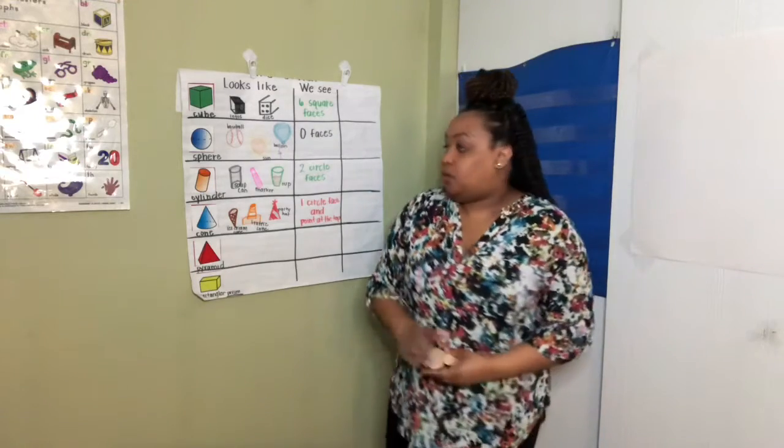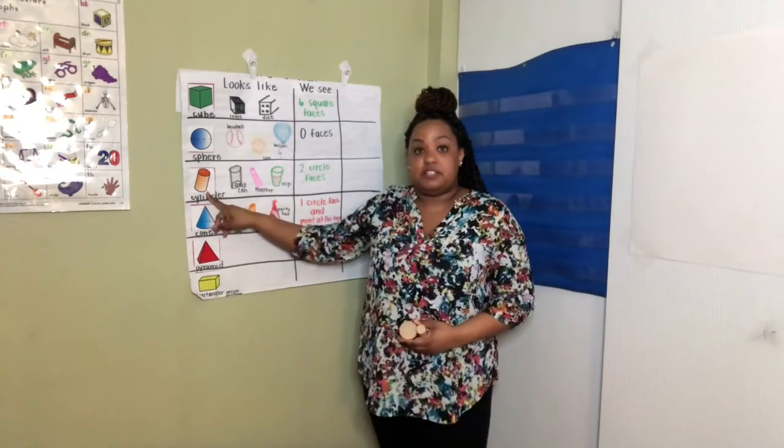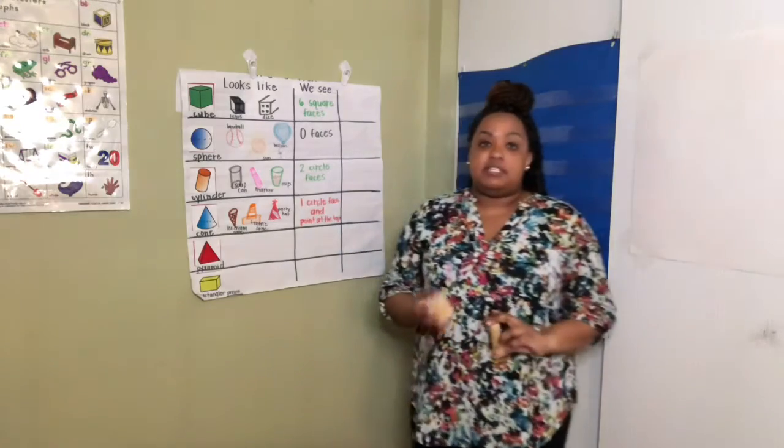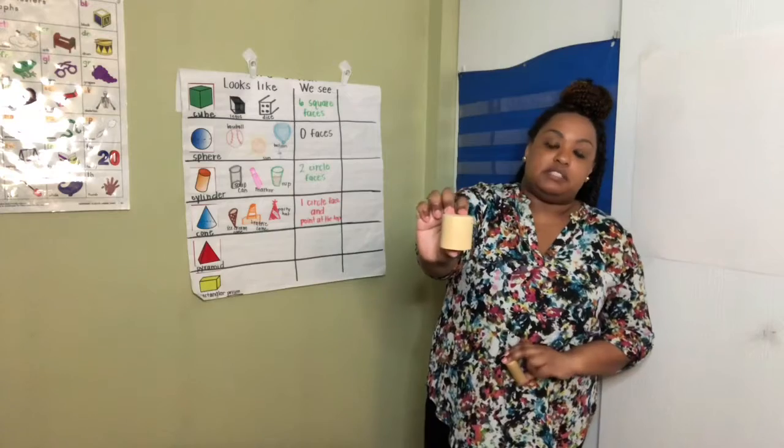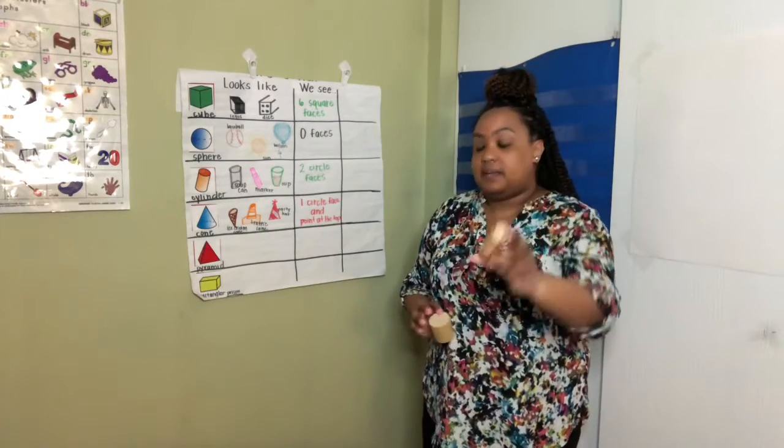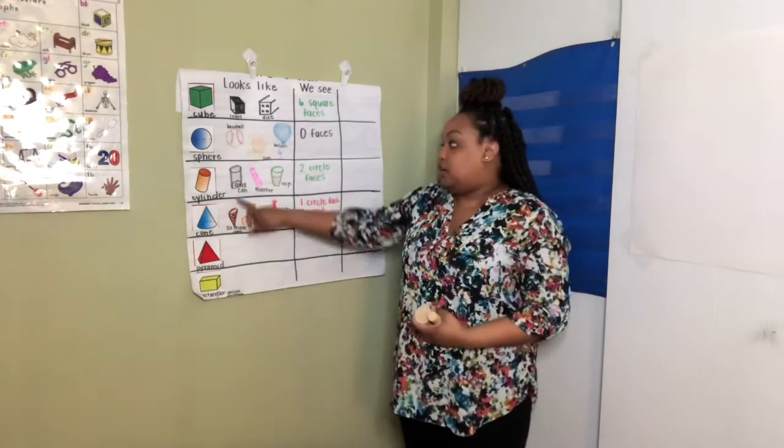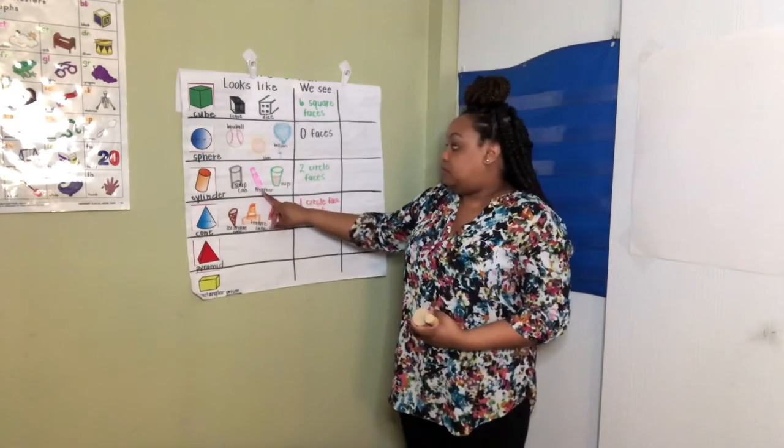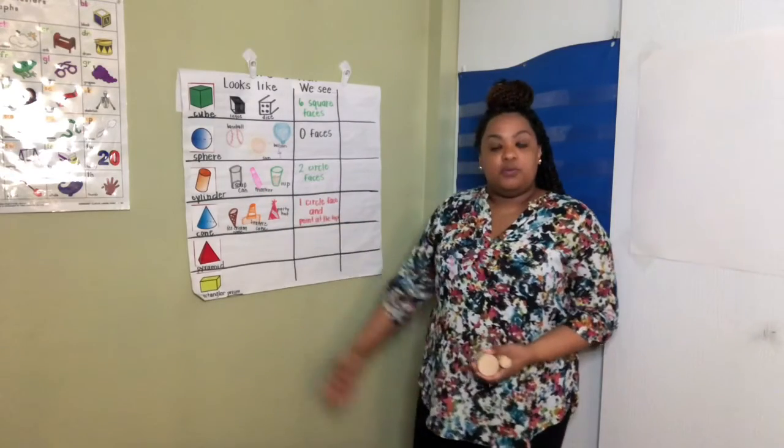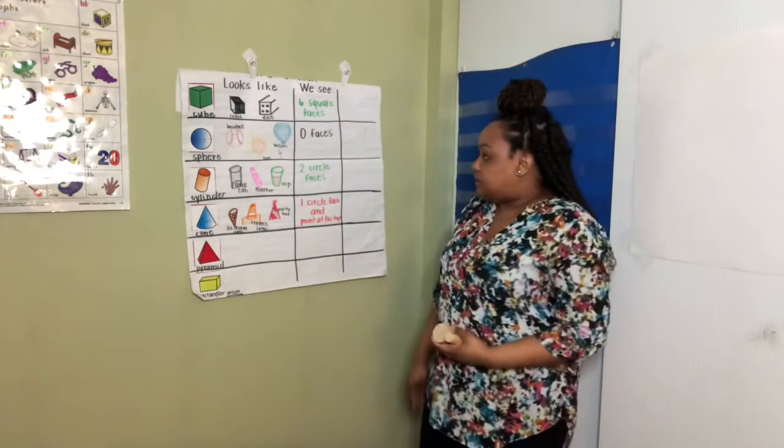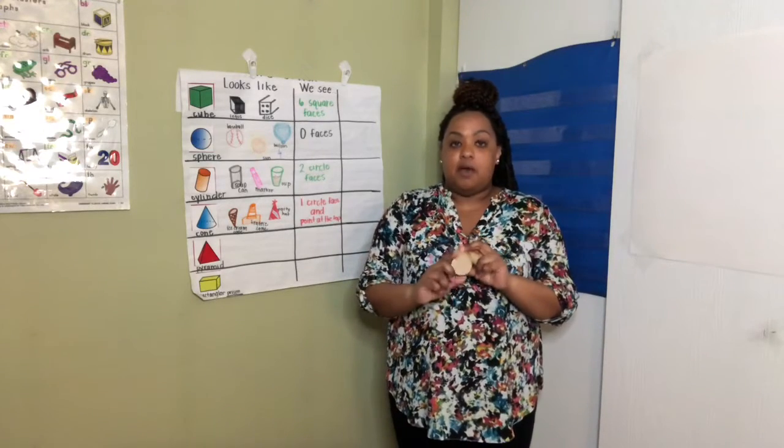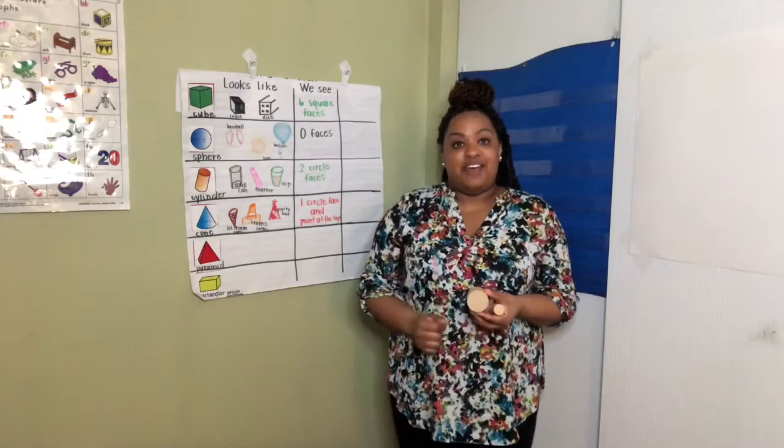Yesterday we practiced the shape of a cylinder. All of our 3D shapes come in many sizes but a cylinder can sometimes be short and fat or tall and skinny. Some things that look like a cylinder are a soup can, a marker, and a cup that you would use to pour your chocolate milk inside. Cylinders are special because they have a circle face at the top and a circle face at the bottom.